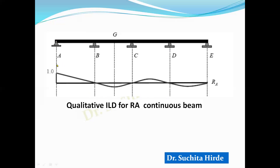Suppose you want to know the maximum uplifting force in column A. If the load is placed on spans BC and DE, there will be no compressive force in that column — instead there will be a tensile force, causing lifting. So to get the maximum uplifting force in column A, we must place the load on spans BC and DE. This is the use of the qualitative influence line diagram — to decide the position of the moving load to get the maximum value of the function.